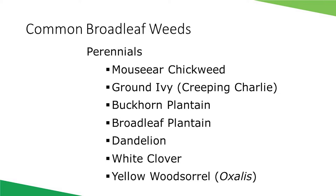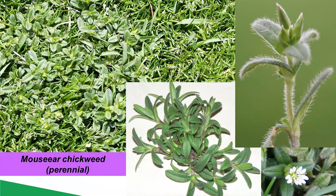Now let's take a look at a few common broadleaf weeds that are perennials. Mouse ear chickweed is a cool season perennial that closely resembles common chickweed in growth habit. However, the leaves are dark green, oblong, and densely covered with hairs — whereas common chickweed is not hairy.